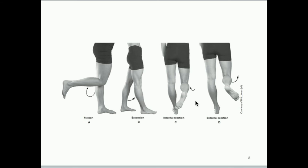Most people don't know about internal and external rotation for two reasons: there are no gym machines that train these motions, and they don't occur when the knee is extended — you need some degree of flexion for them to happen. Internal rotation has the lower leg rotated so the toes point medially, while external rotation has the lower leg rotated so the toes point laterally, away from the midline.